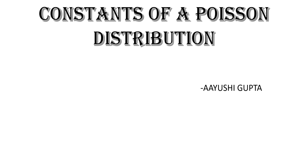Hi. In our last video we talked about Poisson distribution. Today we will talk about some of the constants of a Poisson distribution. When I say constants, I mean we will be talking about mean, variance, moment coefficient of skewness, kurtosis, and so on. We will be talking about these terms for a Poisson distribution.